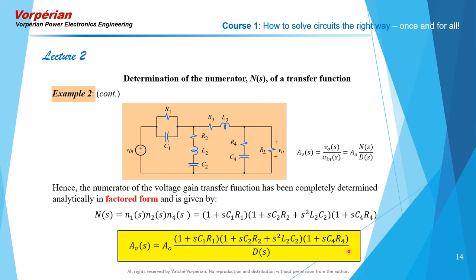Imagine having to arrive at this numerator after writing the nodal equations of this ladder network or trying to do voltage divisions between impedances until you reach the output voltage — an awful lot of algebra. Here, using these techniques, you are able to fish out the numerator all by itself in nice factored form and in nice meaningful form.